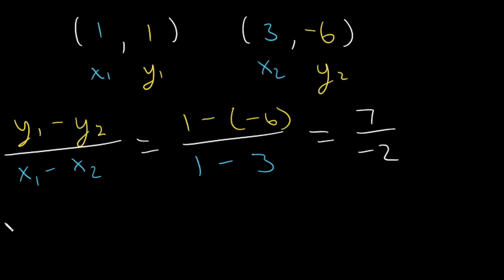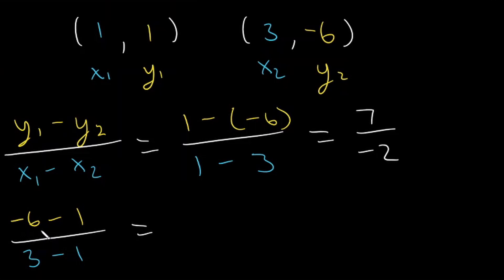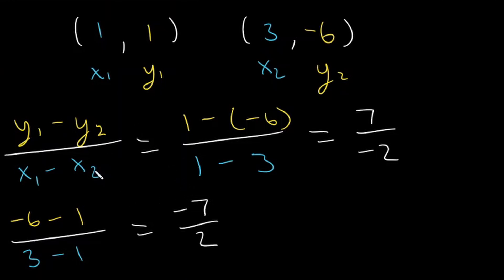Let's try it the other way: negative 6 minus 1 over 3 minus 1. Negative 6 minus 1 is negative 7, and 3 minus 1 is 2. So we get the exact same answer: negative 7 over 2. As long as you keep them in order — your 1s on the same side and your 2s on the same side — you will get the correct answer. So now you know what slope is, how it affects linear functions, and the formula and how to solve for it.